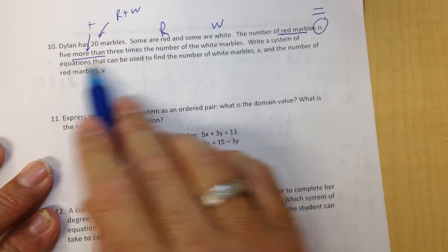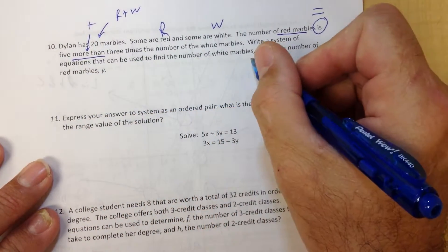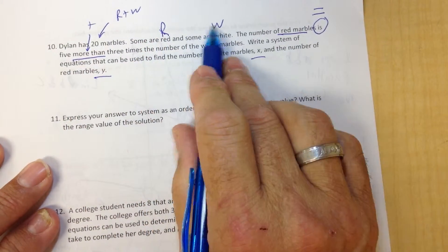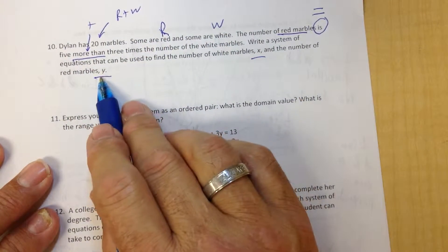Write a system of equations that can be used to find the number of white marbles X and the number of red marbles Y. So we're not going to use R and W, we're going to use X and... what? Y.